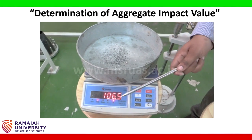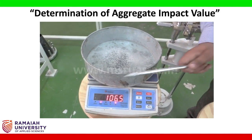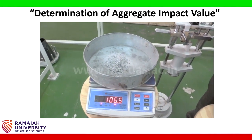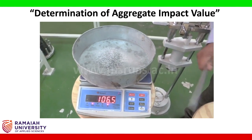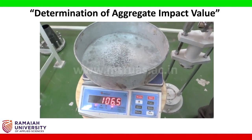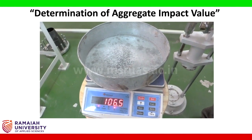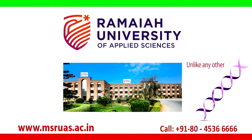The ratio of the weight of aggregate passing through 2.36 mm sieve to the weight of aggregate taken gives the aggregate impact value. For tougher aggregate, the aggregate impact value should be less than 10%. If it exceeds 40%, the aggregate is generally considered not good quality. This completes the aggregate impact test experiment. At MSR UAS, we spark your imagination unlike any other.